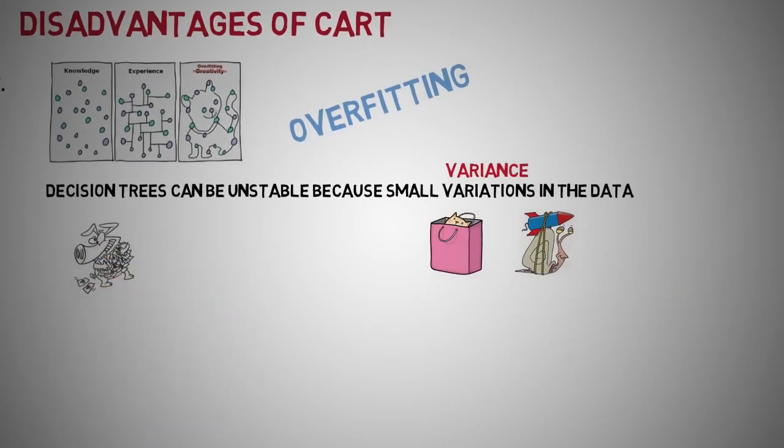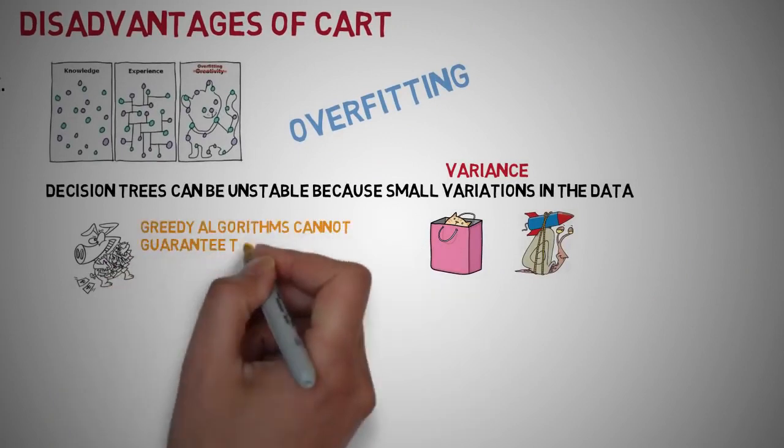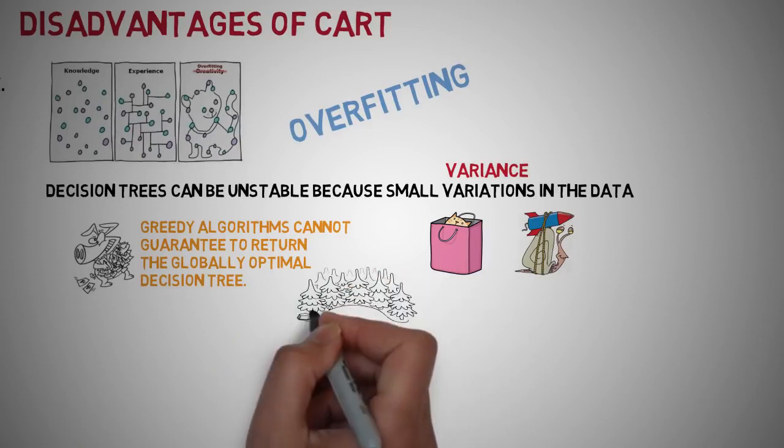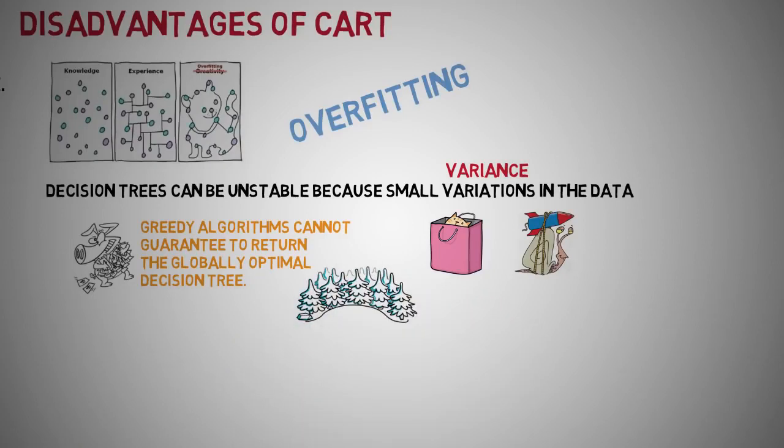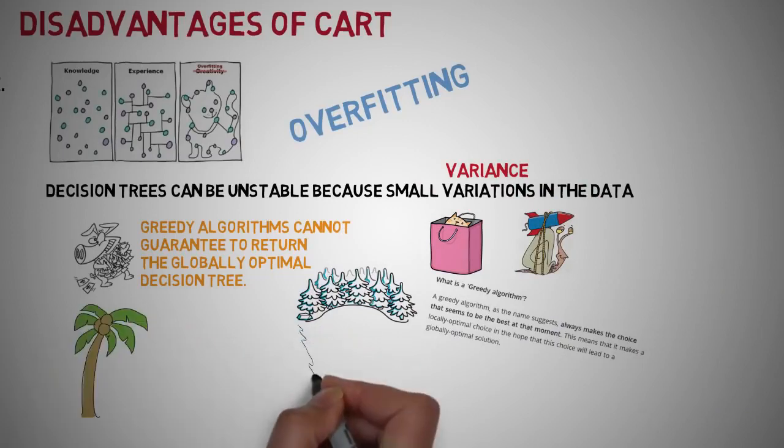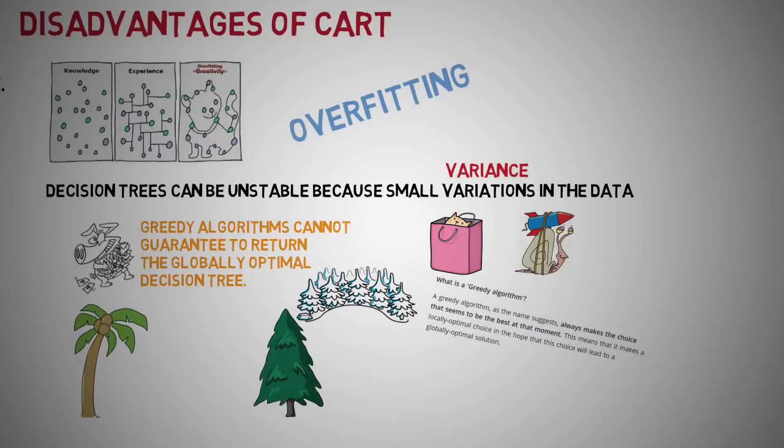Greedy algorithms cannot guarantee to return the globally optimal decision tree. This can be mitigated by training multiple trees where features and samples are randomly sampled with replacement. Decision tree learners also create biased trees if some classes dominate. It is therefore recommended to balance the dataset prior to fitting with the decision tree.